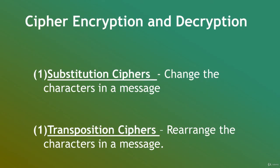Substitution and transposition ciphers are two categories of ciphers used in classical cryptography. They differ in how chunks of the message are handled by the encryption process. Substitution ciphers encrypt plaintext by changing the plaintext one piece at a time. Transposition ciphers encrypt plaintext by moving small pieces of the message around. Anagrams, for example, are a primitive transposition cipher.